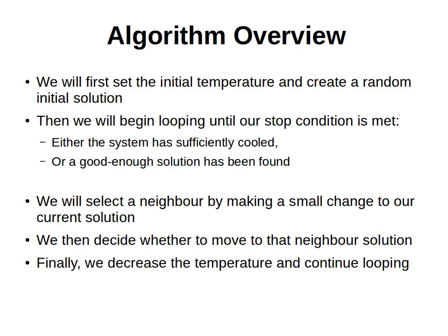Having understood this, let's think of it in terms of the algorithm. We start with a high initial temperature and create a random initial solution. Then we loop until we meet a stopping condition. The stopping condition can be either that the system has sufficiently cooled, that we've found the solution we're looking for, or a good enough solution — for example, for the traveling salesman problem, if the total distance meets or is less than a target distance, we can stop.